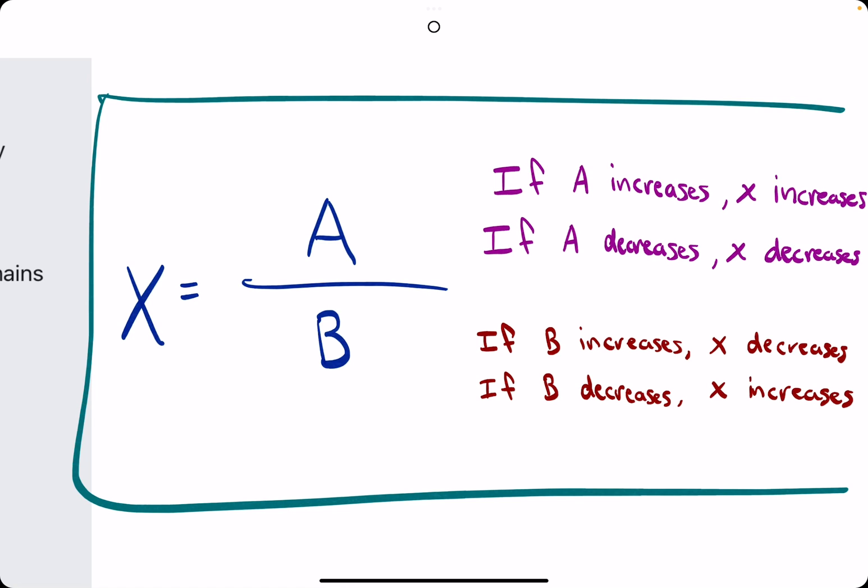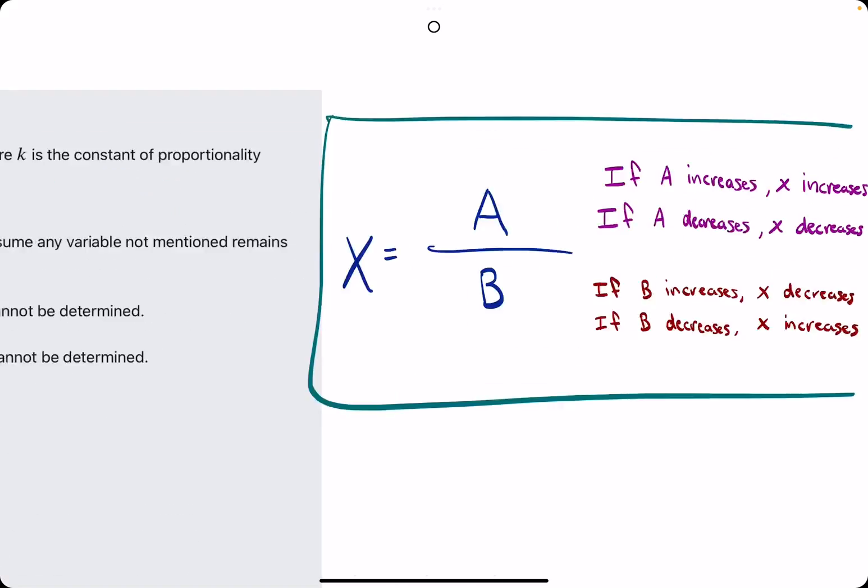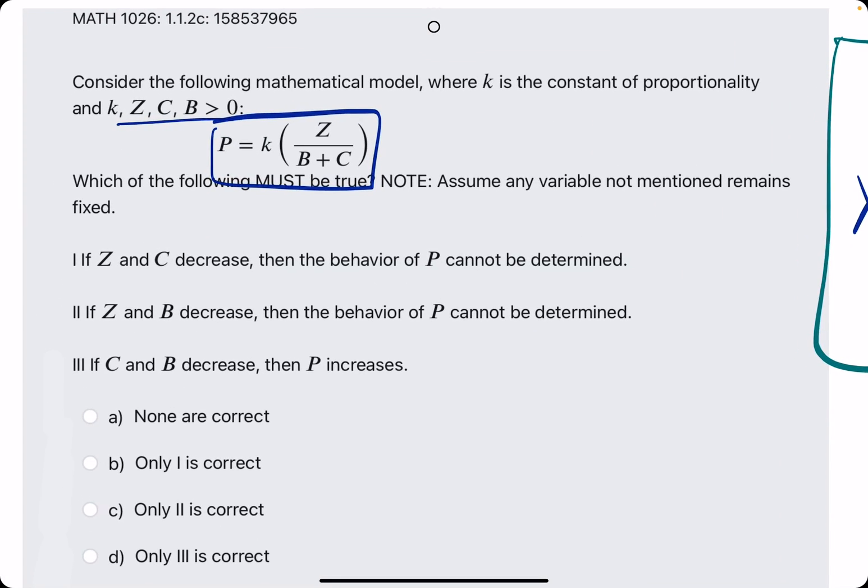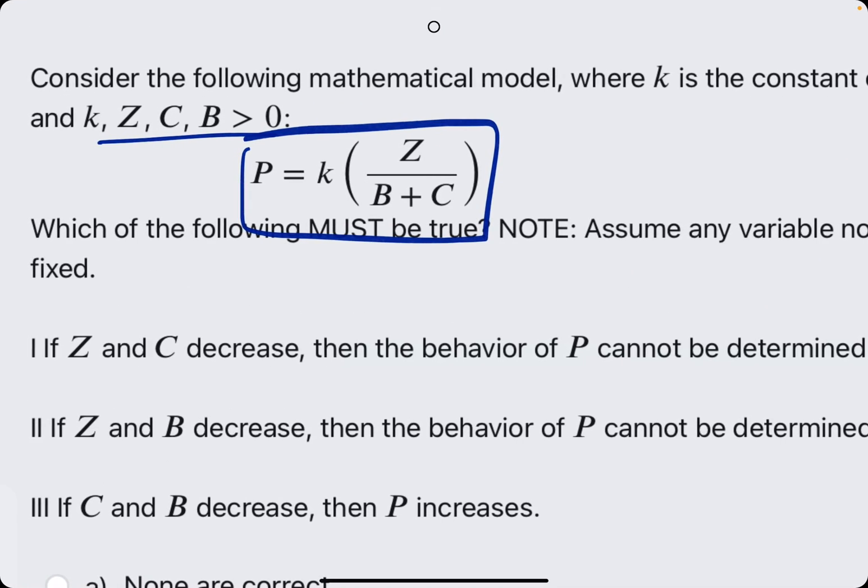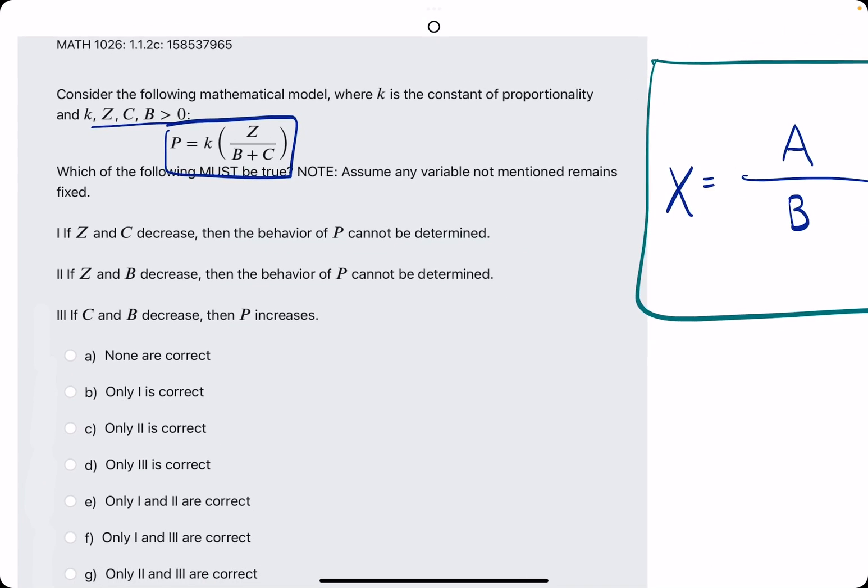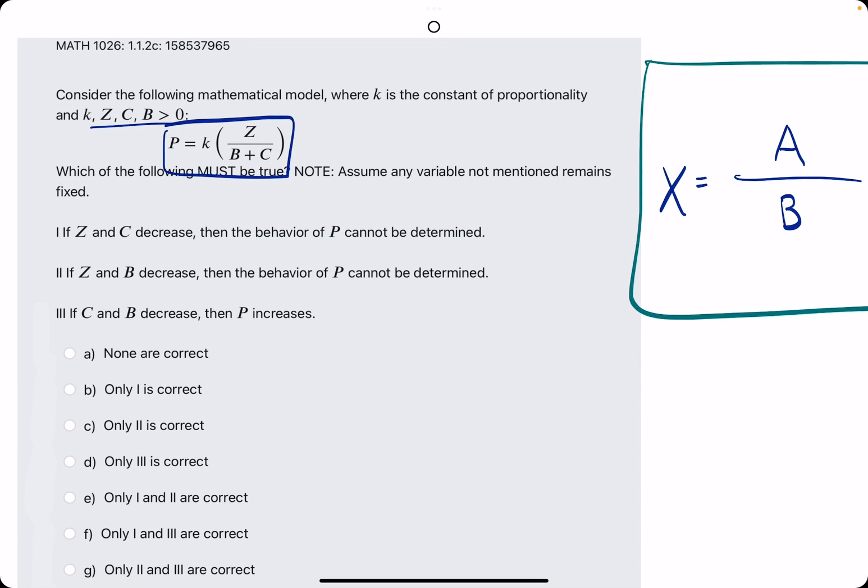So with that in mind, let's check out these options here, relating to this equation that they give us at the top. So they say, if Z and C decrease, then the behavior of P cannot be determined.